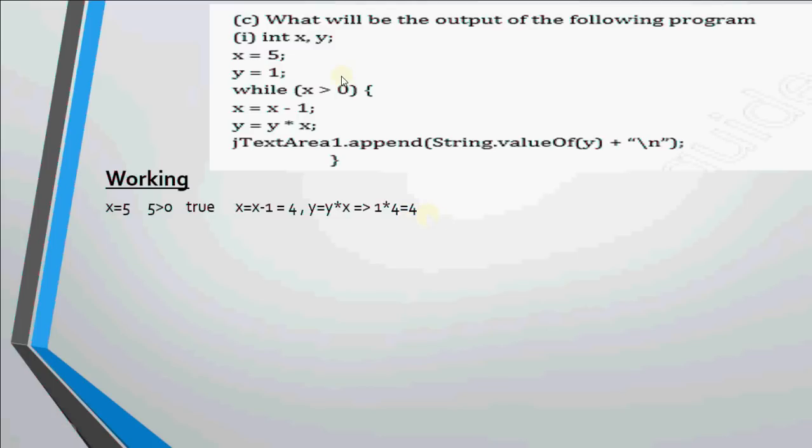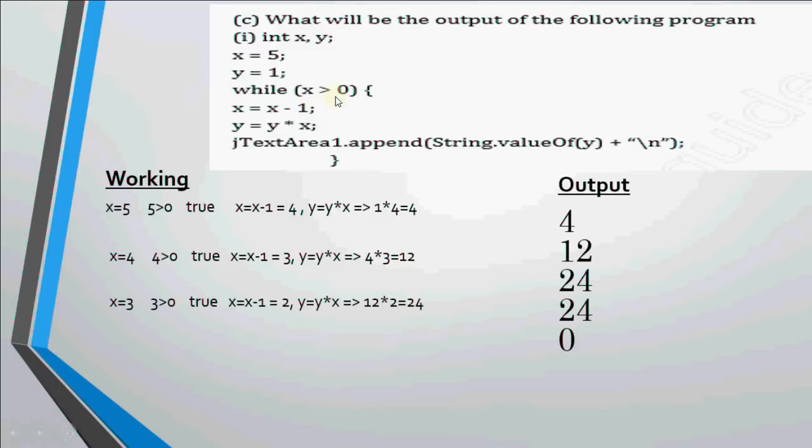Then we move on to while here again. x is 4 now. 4 greater than 0 is true. So it comes here. x becomes 3. Then it comes here. y became 4 in the last iteration. x is right now 3. So 4 into 3 is 12. That goes to the text area. Then we check for x greater than 0 where x is 3. So x greater than 0 is true. 3 is greater than 0. x becomes 2. We multiply the last value of y which was 12 with 2 and get 24 which goes on the text area.